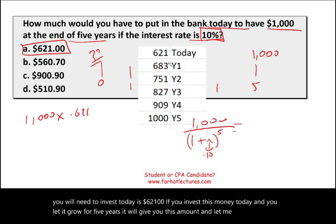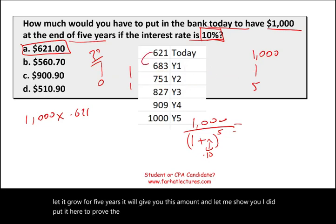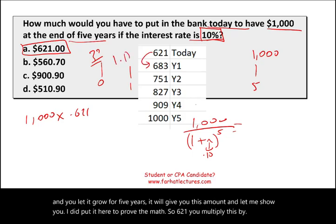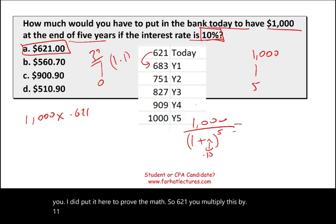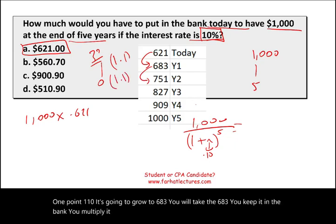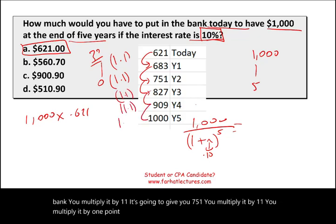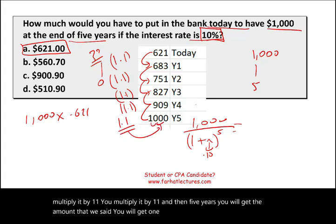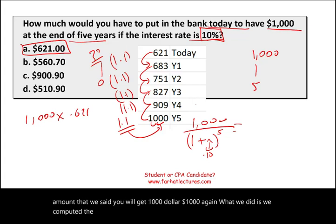Let me prove the math. Starting with 0.621, multiply by 1.1 — it grows to 0.683. Keep it in the bank, multiply by 1.1 — gives 0.751. Multiply by 1.1, then 1.1, then 1.1 again. In five years you will get $1,000, the amount promised. What we did is compute the present value of one single amount. But that's not the only thing you need to know — you also need to find the present value of a series of cash flows, which is called an annuity.